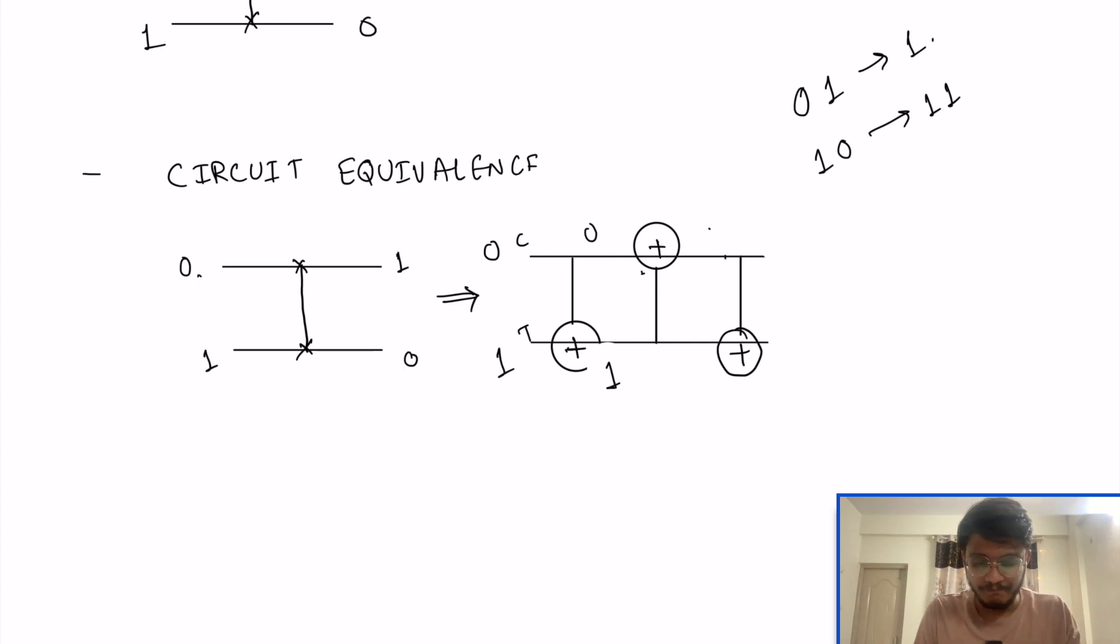Now, since this is your control and this is your target, your output will be 1 and 1. And again, with the third one, your control and target qubit get swapped. So, since your control qubit is 1, your target value gets changed. So output will be 1 and 0.